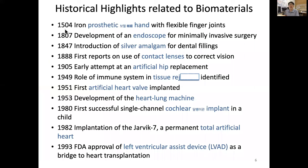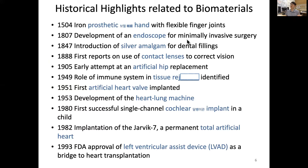About 500 years ago, there was an iron prosthetic hand with flexible finger joints found for those who had lost their hands. And about 200 years ago, the development of the endoscope for minimally invasive surgery.